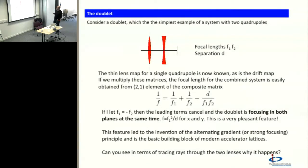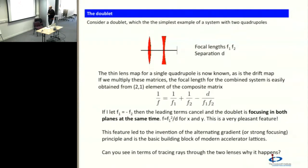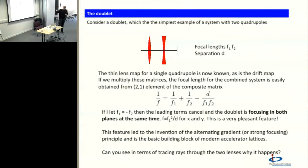How it works is like this. We have a doublet — a simple system with two quadrupoles: one horizontally focusing quadrupole, one vertically focusing quadrupole, and some gap between them of distance d. They each have focal lengths f1 and f2. That's the f that appears in the thin lens transfer matrix — the product of k times l with units of meters. If you just sit down and multiply together the three matrices — the matrix for the first quadrupole, the drift, and the second quadrupole — three two-by-twos — and multiply them all together, you get some composite matrix.